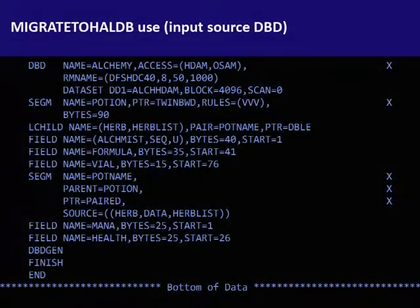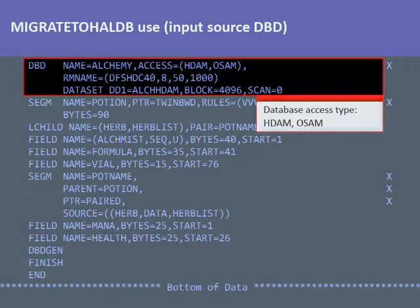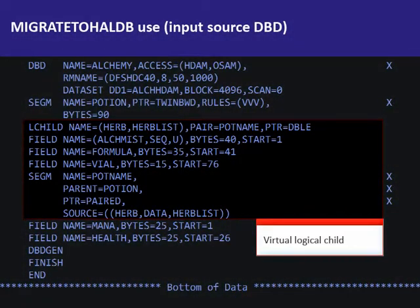Let's take a look at a short demonstration of a migrate to LDB job. This slide shows the input DBD. Our database is of an HDAM access type, and contains a virtual logical child. Now let's create a JCL to migrate our database definition to a LDB type.